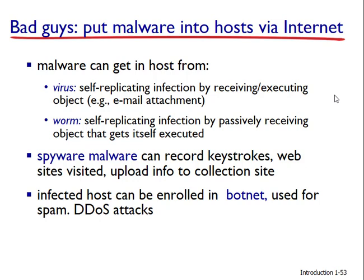Malware can spread in the form of a virus or a worm. Viruses are malware that require some form of user interaction to infect the user's device. The classic example is an email attachment containing malicious executable code. If a user receives and opens such a message, the user inadvertently runs the malware on the device. Such email viruses are self-replicating — once executed, the virus may send a message with an identical malicious attachment to every recipient in the user's address book.